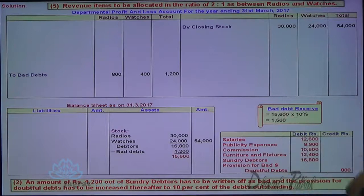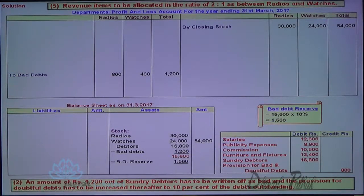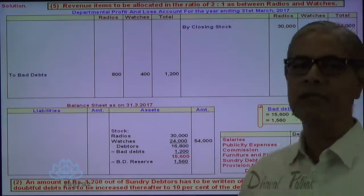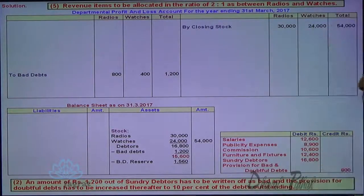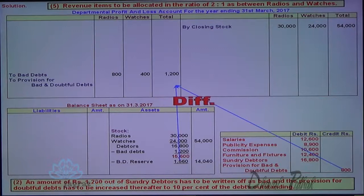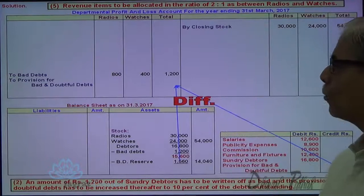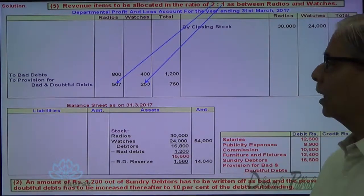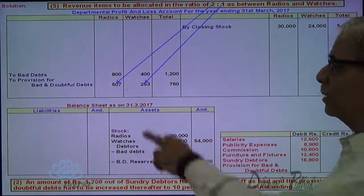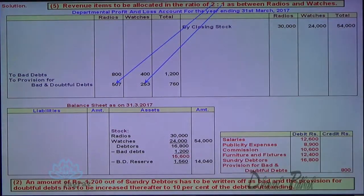Now, the bad debt reserve: 15,600 into 10% equals 1,560. Existing provision is 800, so additional provision required is 1,560 minus 800, which works out to be 760. That will be distributed in the ratio of 2 to 1, so 507 and 253 — one third rounded up, fractions are omitted. This is how provision for bad and doubtful debts is being recorded in the columnar profit and loss account.